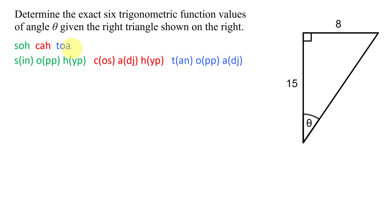Which is SOH CAH TOA. S-O-H stands for the sine is the opposite side over the hypotenuse. C-A-H is the cosine is the adjacent over the hypotenuse. And TOA is the tangent is the opposite over adjacent.